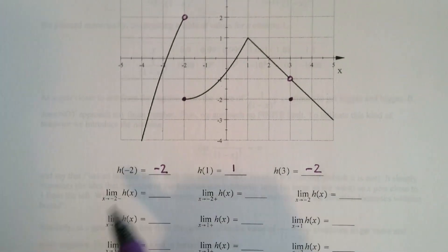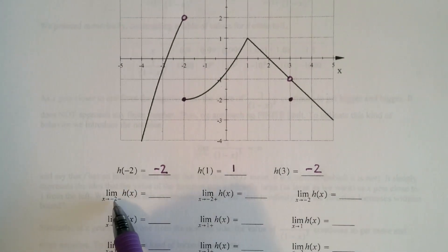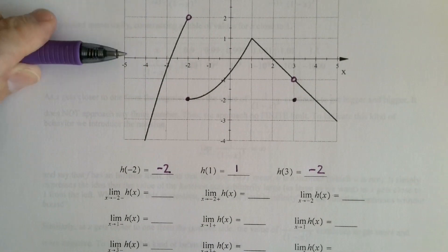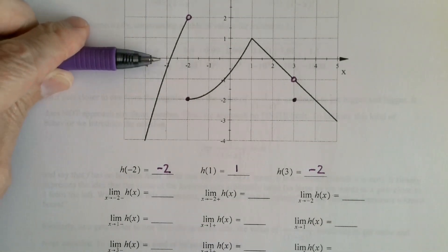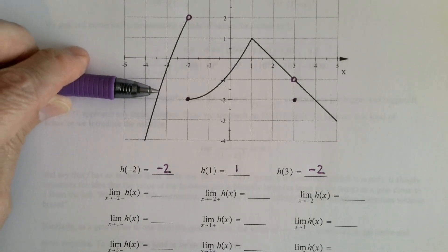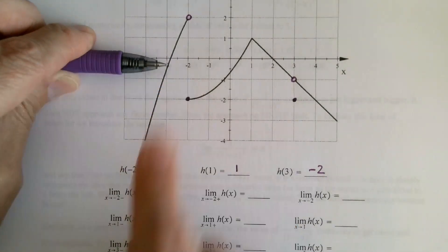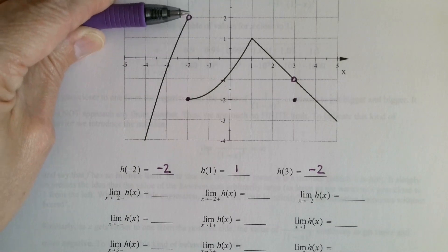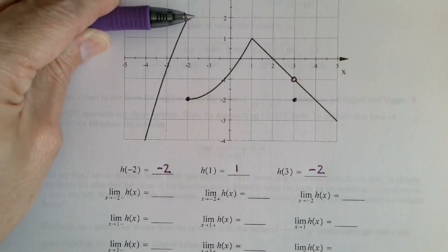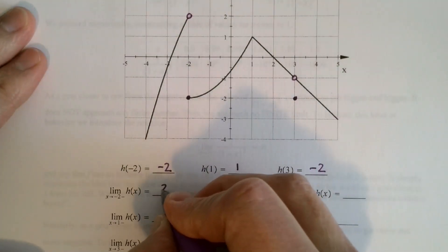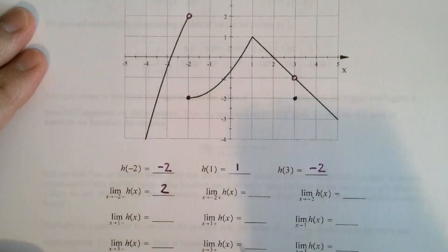Now let's look at the limits. The limit as x approaches negative 2 from the left — here's negative 2, we approach from this side. As x gets closer and closer to negative 2, we move along this curve going closer and closer to this hole, which has a y-coordinate of 2. So the value of the function is getting closer and closer to 2 as x approaches negative 2 from the negative side.